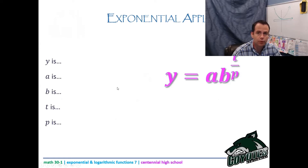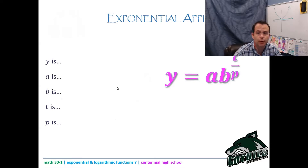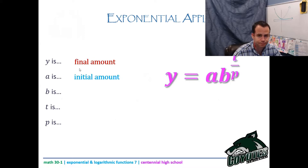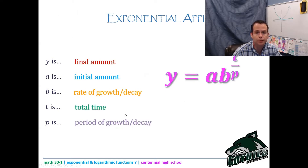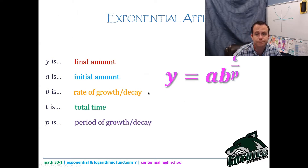This formula is on your formula sheet so you don't need to memorize it. y is your final amount, a is your initial amount, b is your rate, t is your total time, and p is your period — the time it takes to do whatever you're doing.